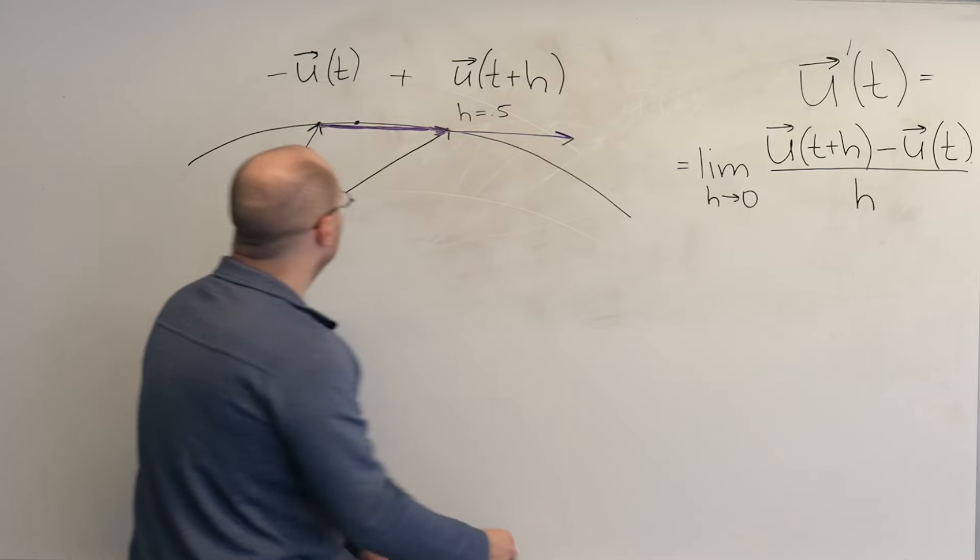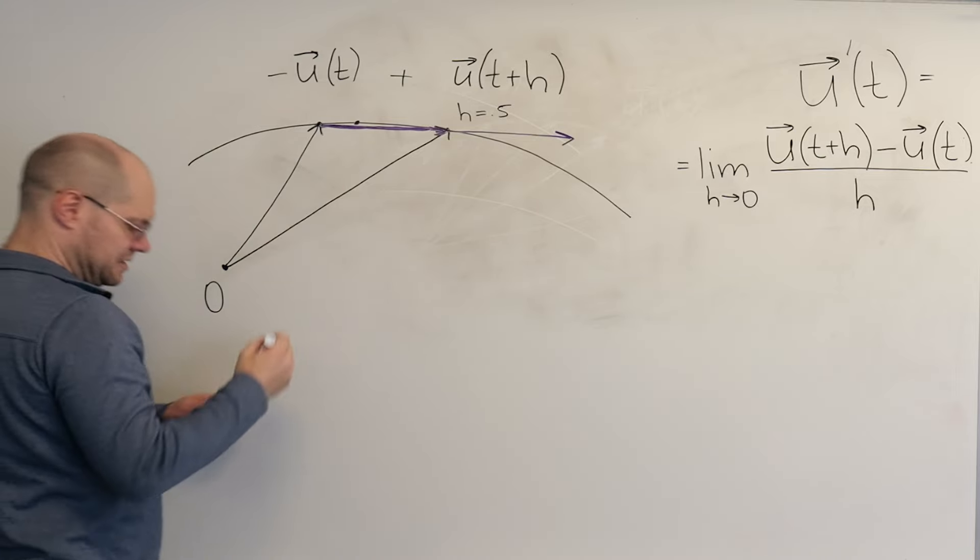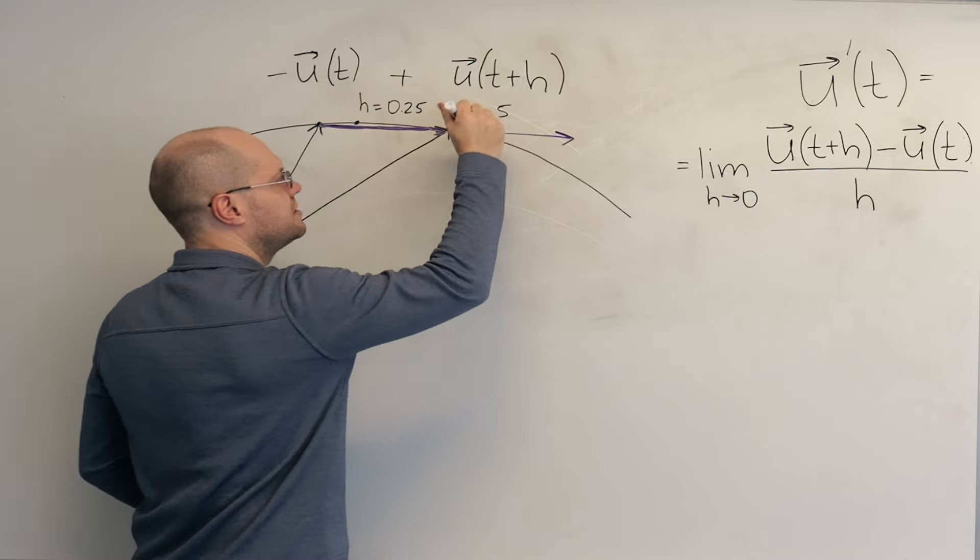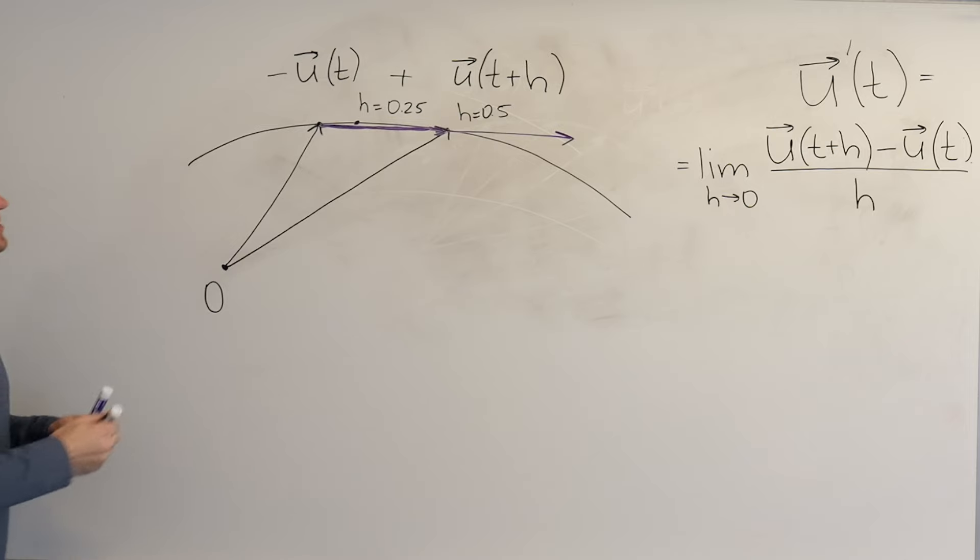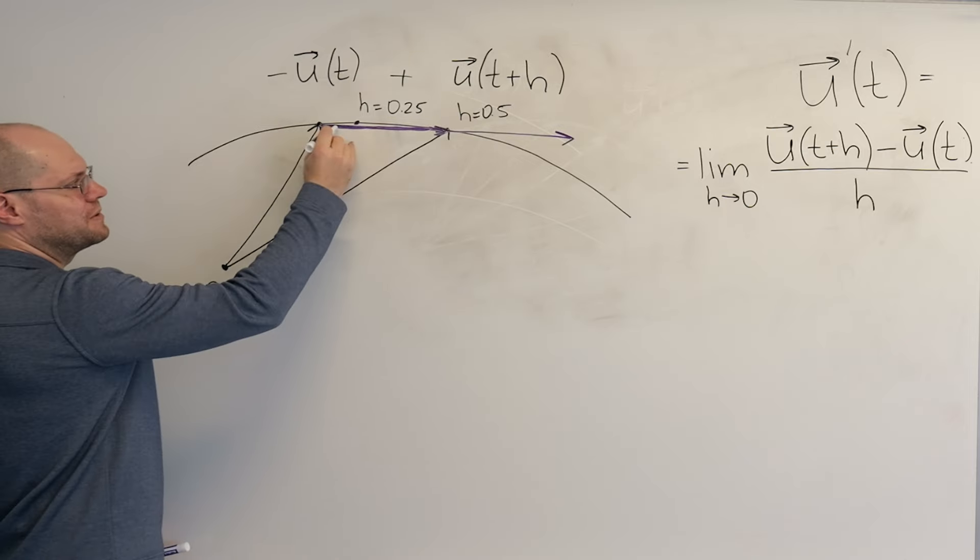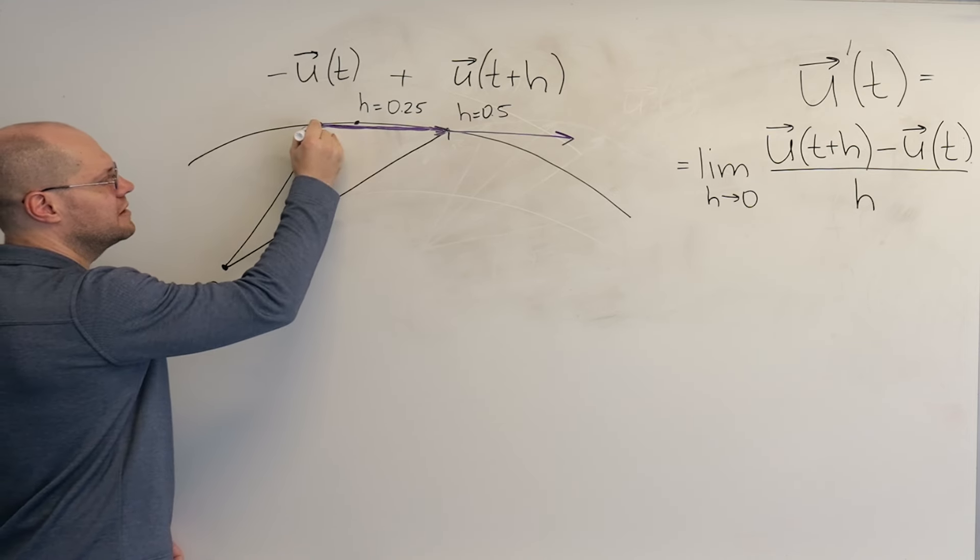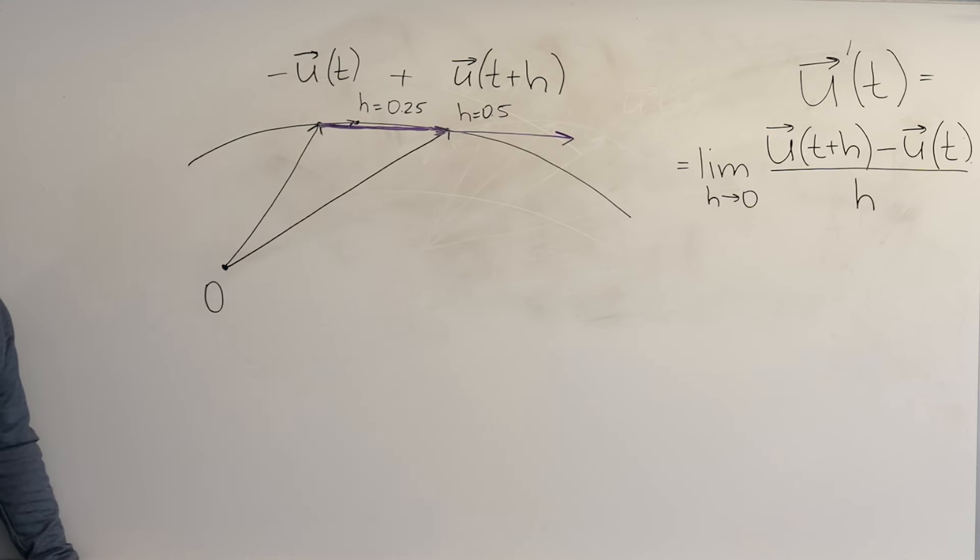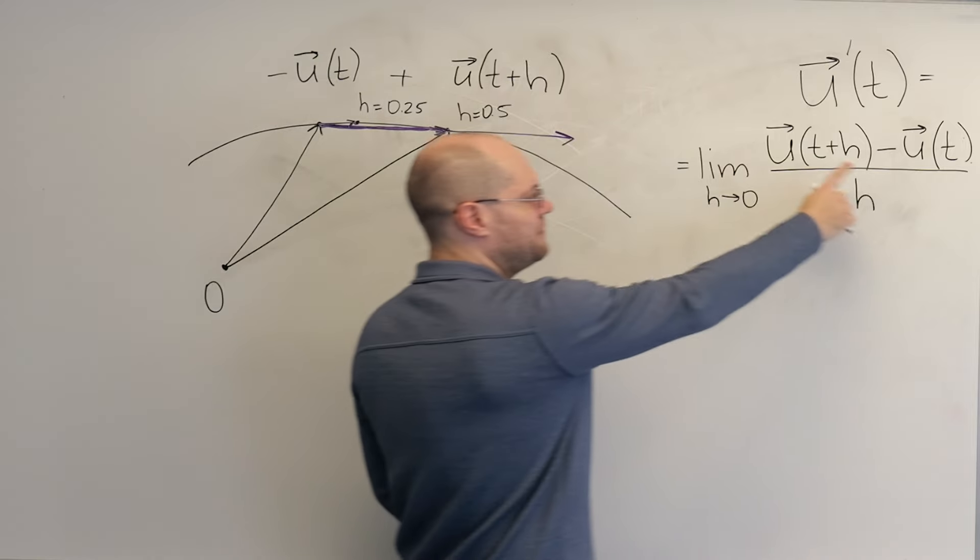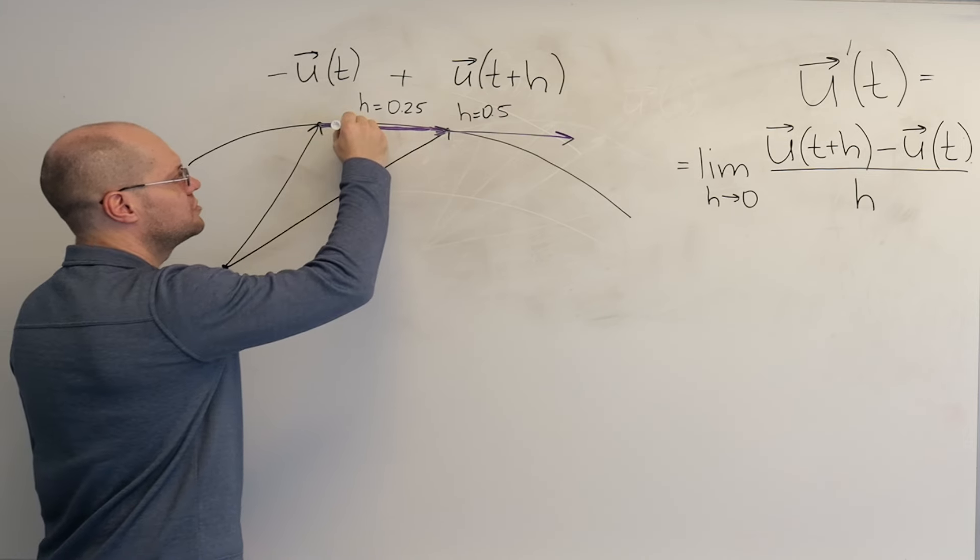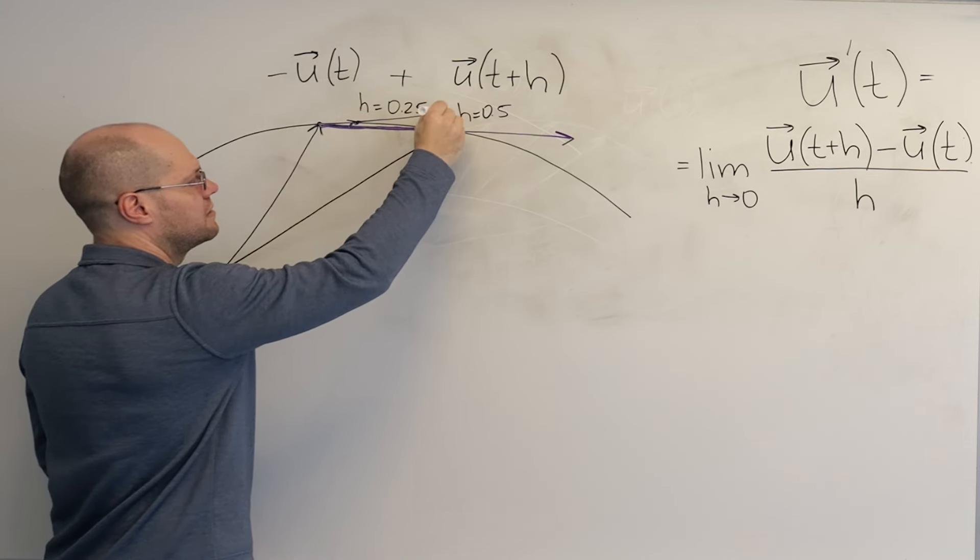So we would find, so this is h equals 0.25. The difference, I won't even draw the vector because you know that all I'm interested in is the difference, will be like this. That's the difference. And now I will be dividing by 0.25, which means multiply by 4. So it would end up being like this.